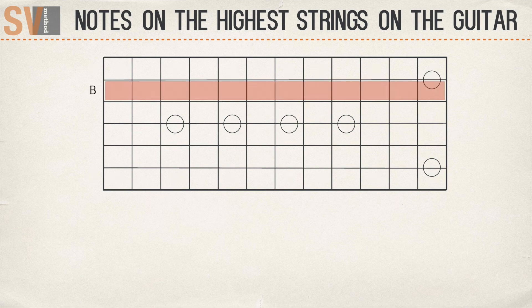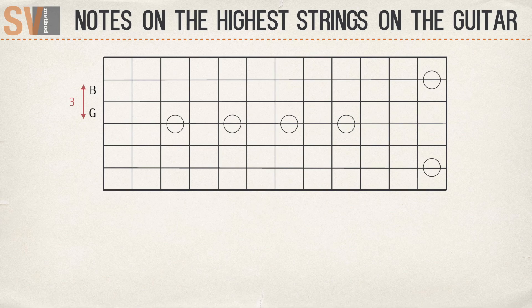The B string remains. The distance between the G string and the B string is not the interval of a perfect fourth like the other strings, but the interval of a major third. That means that you can't octave the notes in the same way as with the other strings.